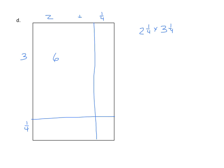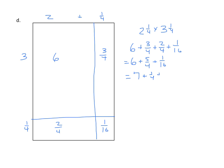Three times two is six. Three times one-fourth is three-fourths. Two times one-fourth is two-fourths. And one-fourth times one-fourth is one-sixteenth. Now we'll find the sum of our partials: six plus three-fourths plus two-fourths plus one-sixteenth. That's six plus five-fourths plus one-sixteenth. Five-fourths becomes one and one-fourth, so we have seven plus one-fourth plus one-sixteenth. Converting one-fourth to sixteenths — multiply numerator and denominator by four — gives four-sixteenths. So we have seven plus four-sixteenths plus one-sixteenth equals seven and five-sixteenths square inches.